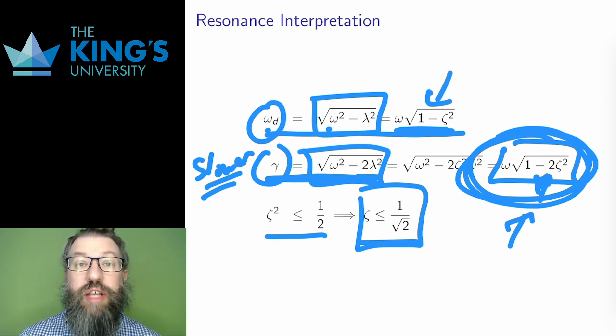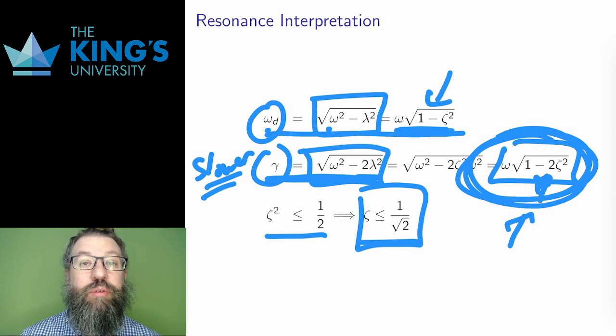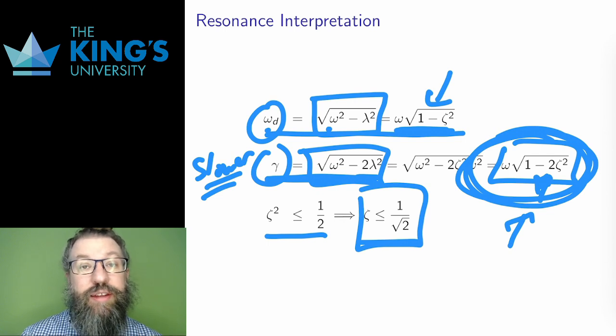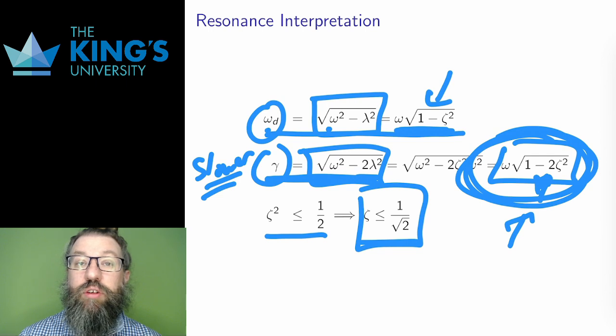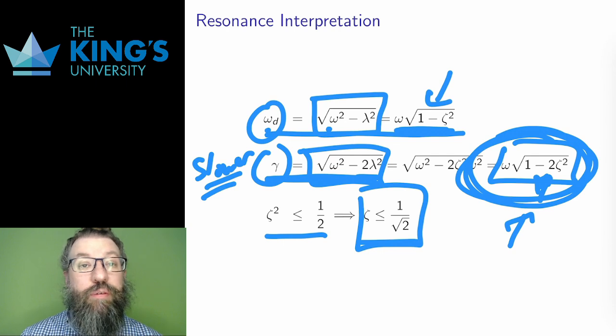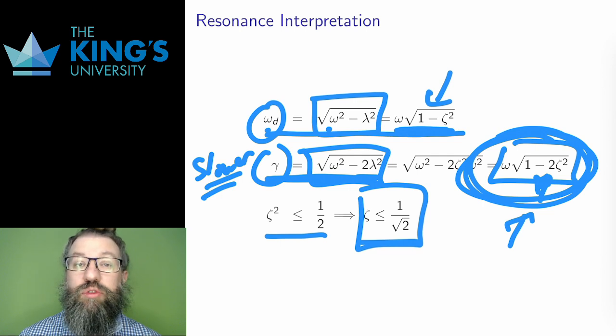And this, again, is important for the applications. If you are designing a system that doesn't want a resonant frequency, i.e. a system where amplitude can't be maximized, you may have to add in enough friction to cross this one over root two threshold. If you do want resonance in acoustics or some other similar situation, then you have to limit friction to allow for it.